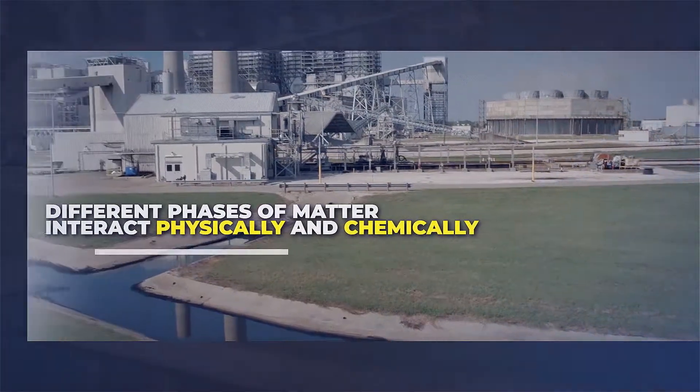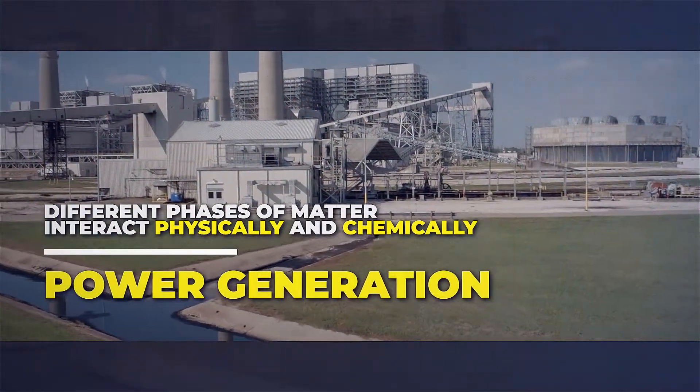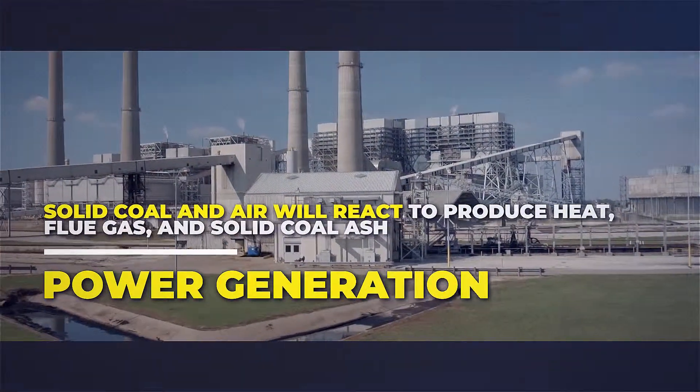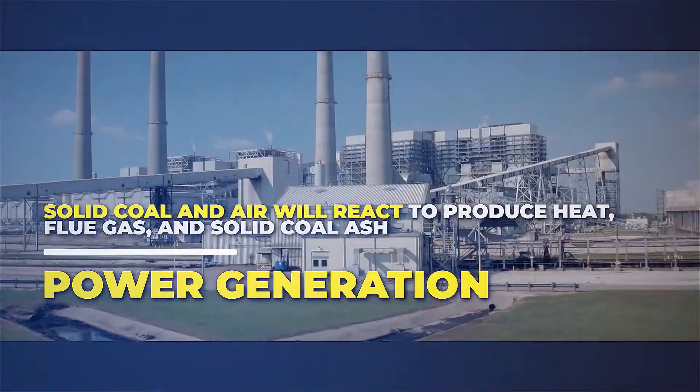Different phases of matter interact physically and chemically in power generation systems. For example, solid coal and air will react to produce heat, flue gas, and solid coal ash.